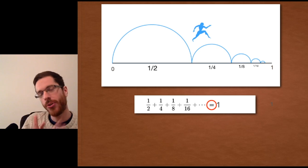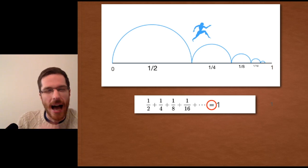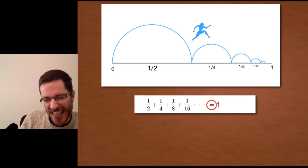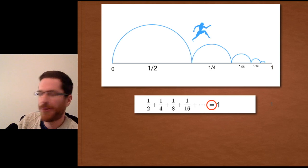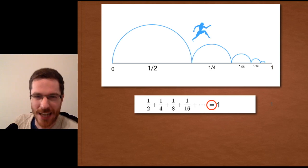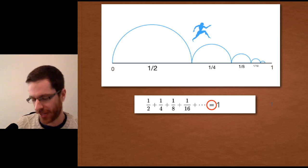Zeno isn't asking, how could the runner get arbitrarily close to one? He's not saying, how could the runner get ever so a fraction of a fraction of a fraction so close to the finish line? He wants to know, how could he complete the race? How could he get across the finish line?